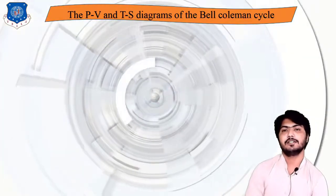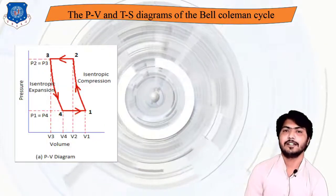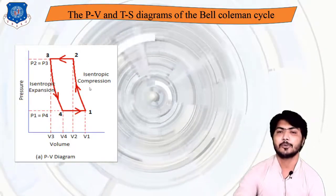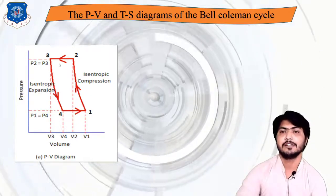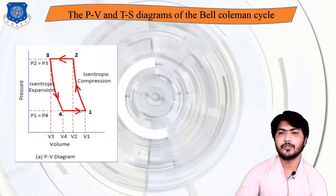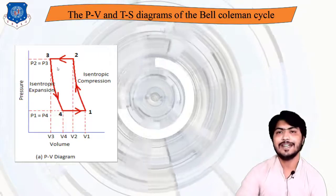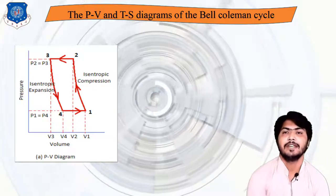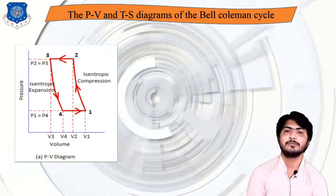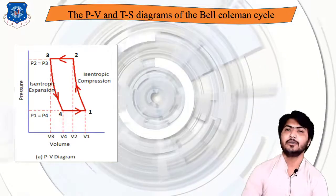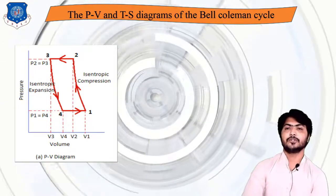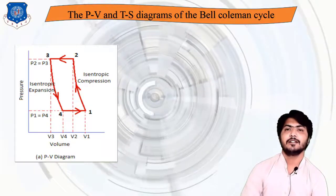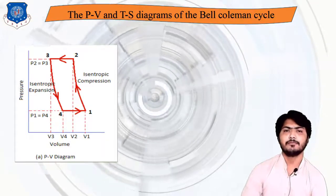In the PV diagram of the Bell-Coleman cycle, processes 1 to 2 and 3 to 4 are isentropic compression and expansion respectively. Processes 2 to 3 and 4 to 1 are isobaric (constant pressure) processes occurring in heat exchangers. Therefore P2 = P3 and P1 = P4.